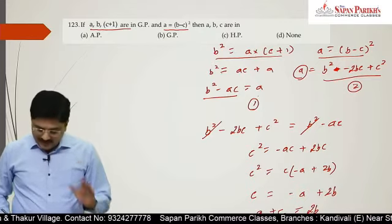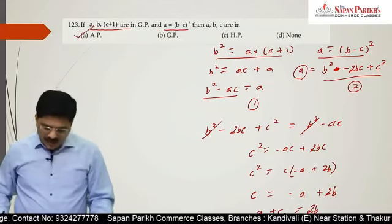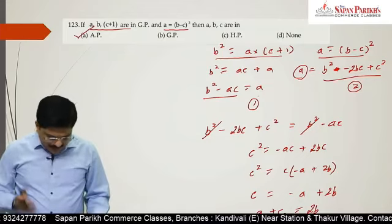What happened? a, b, c are in arithmetic progression. Answer is option a. All answers are option a.